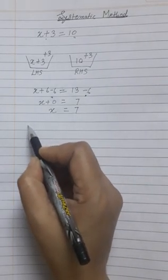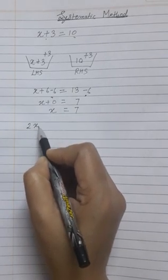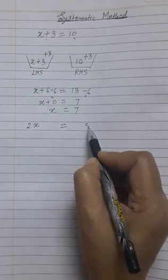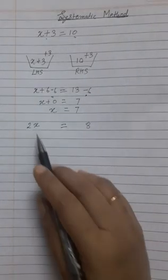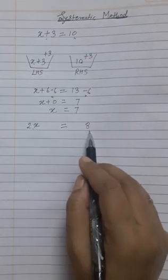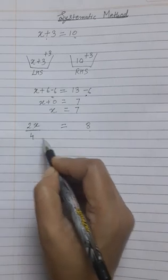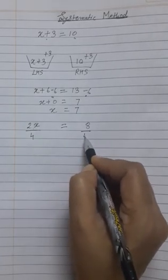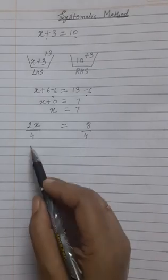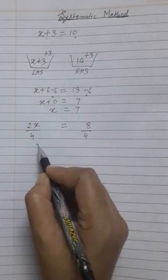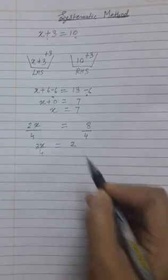For another example, let us take the equation 2x equals 8. Right now this equation is balanced — the value of 2x is equal to 8. Now if I divide this equation by 4, then to keep it balanced, I have to divide this side also by 4. Then 2x divided by 4 equals 8 divided by 4, which is 2.